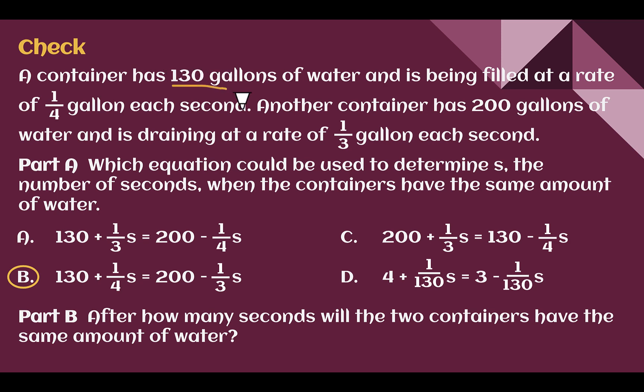So a container has 130. It starts with 130 and it is being filled at a rate of one fourth gallon. So filled means the total is going up. We should see 130 plus one fourth for each second.